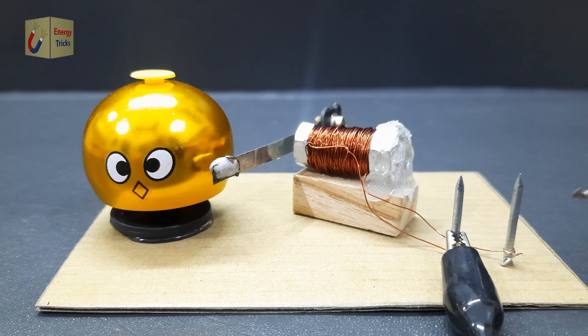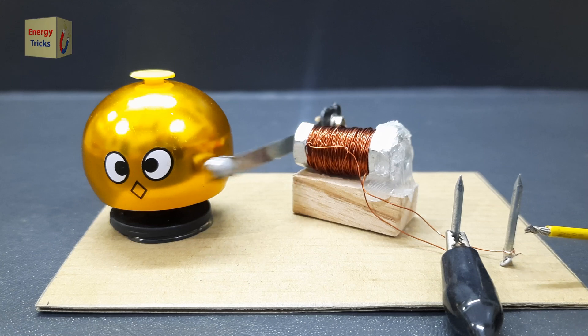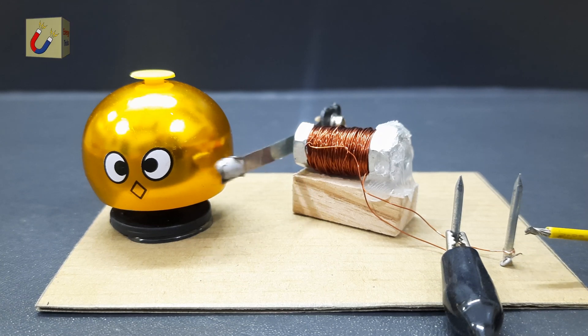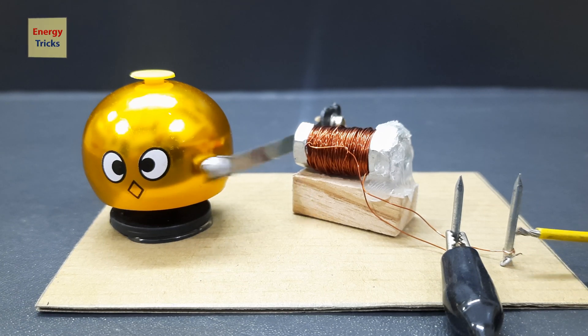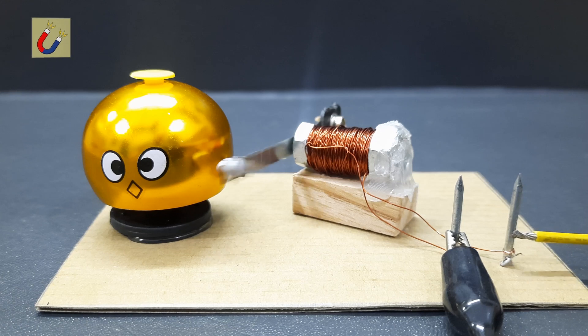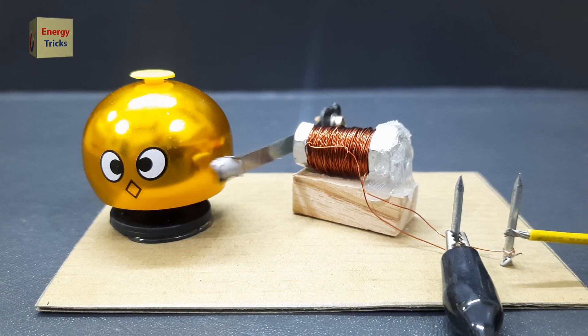Number three, for my third science project, I created a bell using an electromagnet and battery, which was a simple yet effective demonstration of the principles of electromagnetism and how electrical energy can be converted into mechanical motion.